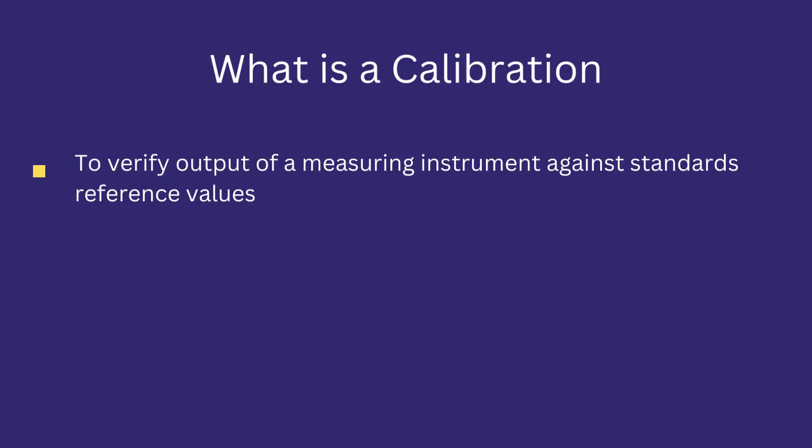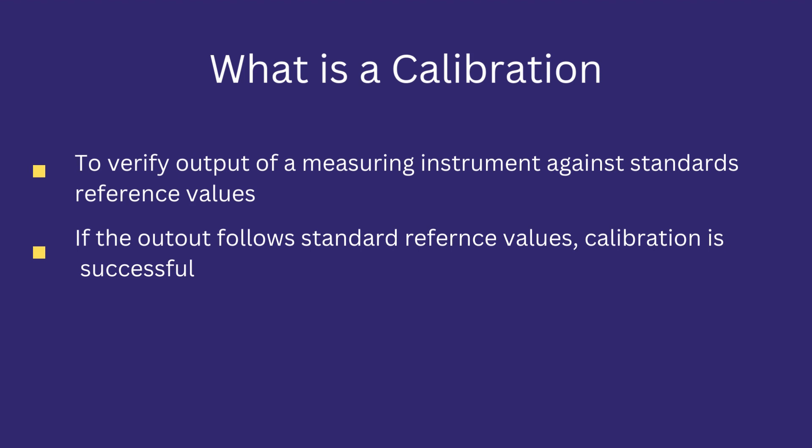So what is calibration? Calibration is a process to verify the output of a measuring instrument against standard reference values. The output of a measuring instrument is compared with an instrument or device which has its output verified. Calibration helps in identifying faulty instruments because during normal processes it is difficult to classify faulty instruments from the correct ones. If the output of the measuring instrument follows standard reference values, calibration is successful and the instrument can be used for measuring relevant variables. It is considered that the output of the instrument is reliable and can be safely used in any process.